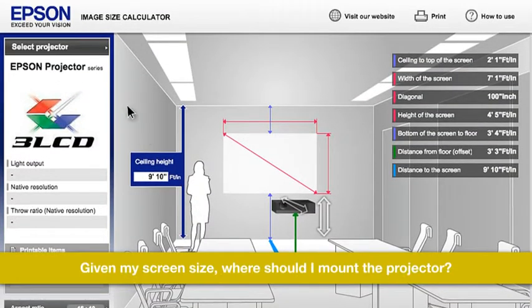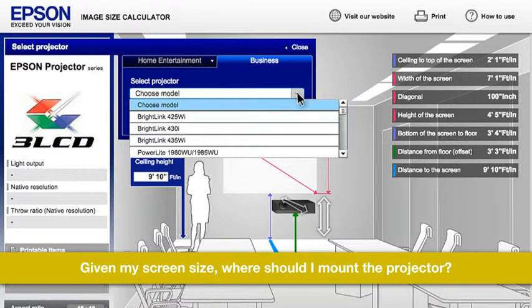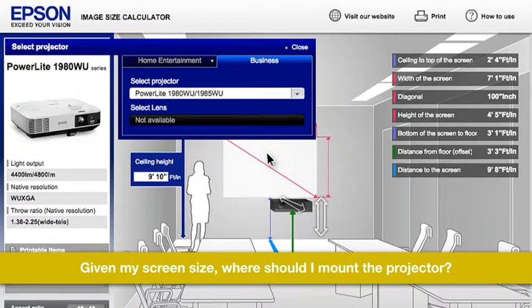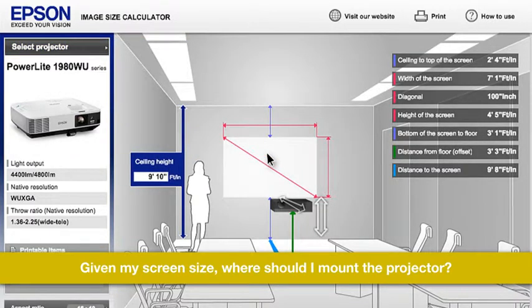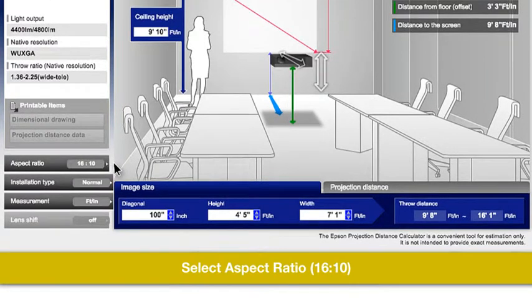Let's walk through an example. Say you have a customer asking where to mount their projector, a PowerLite 1985 WU, in order to get a 200 inch image. They are projecting in the 16 to 10 aspect ratio.